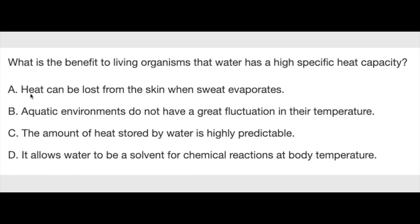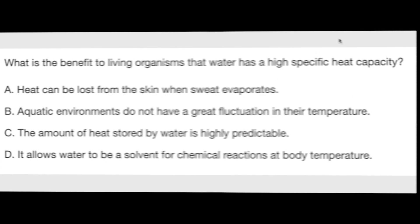Having a high specific heat of vaporization is what makes it good for option A — heat can be lost from the skin when sweat evaporates. That is absolutely correct, with very similar reasoning to option B. But B is the correct answer: aquatic environments do not have great fluctuation in temperature because of water's high specific heat capacity. To heat a lake or ocean by one degree Celsius requires a tremendous amount of energy. Allowing sweat to evaporate also requires a lot of energy, but that energy is referred to as the heat of vaporization.